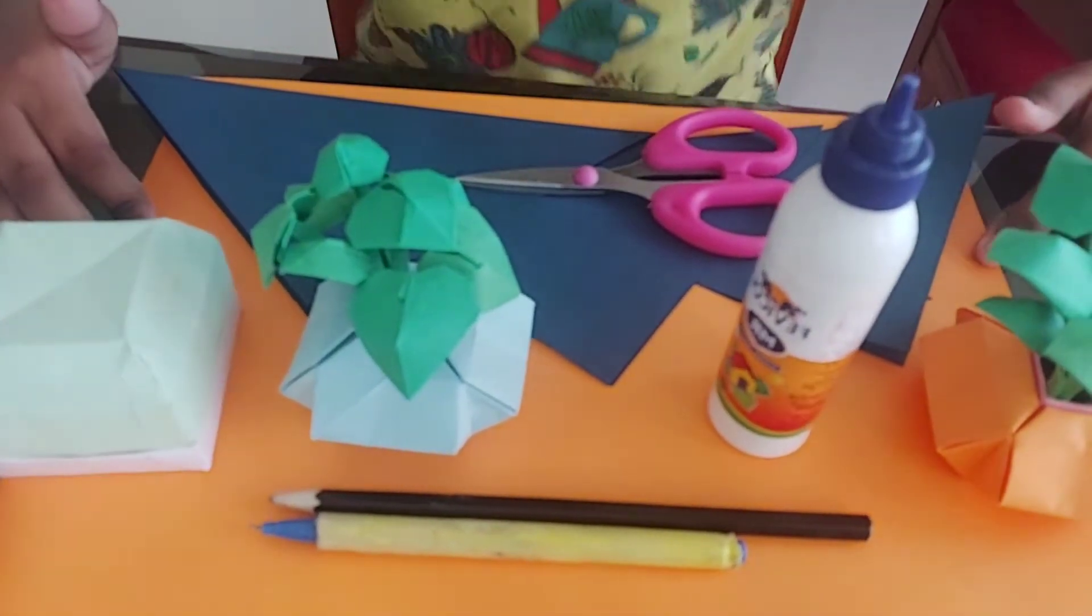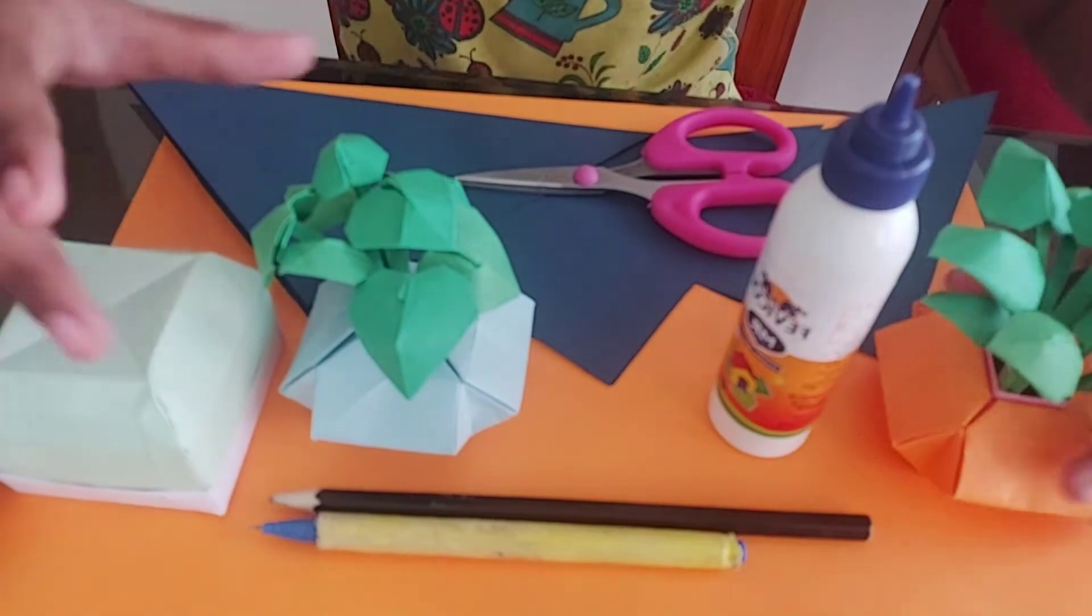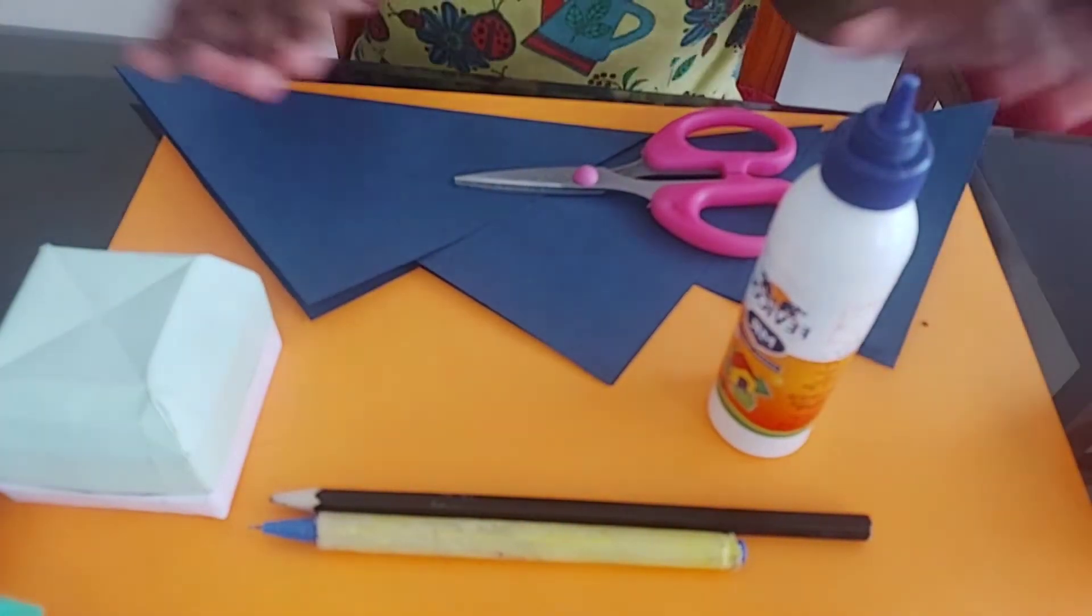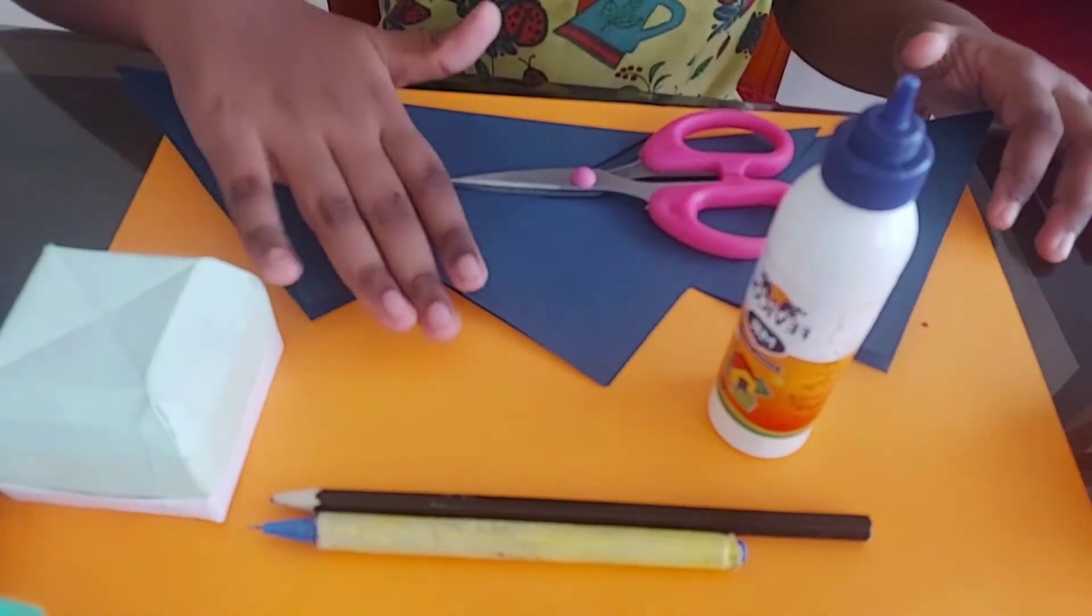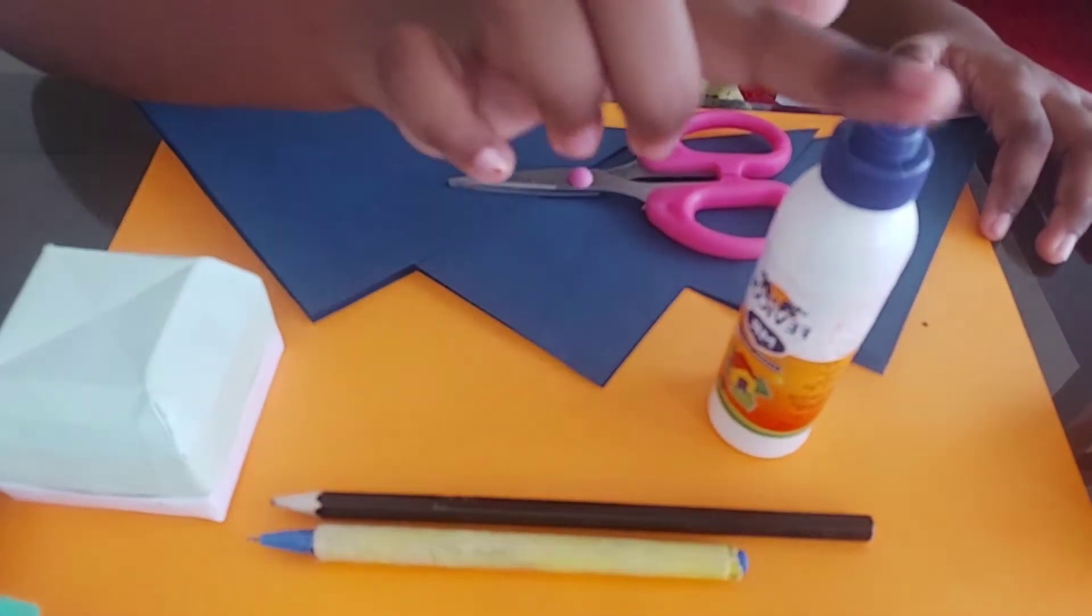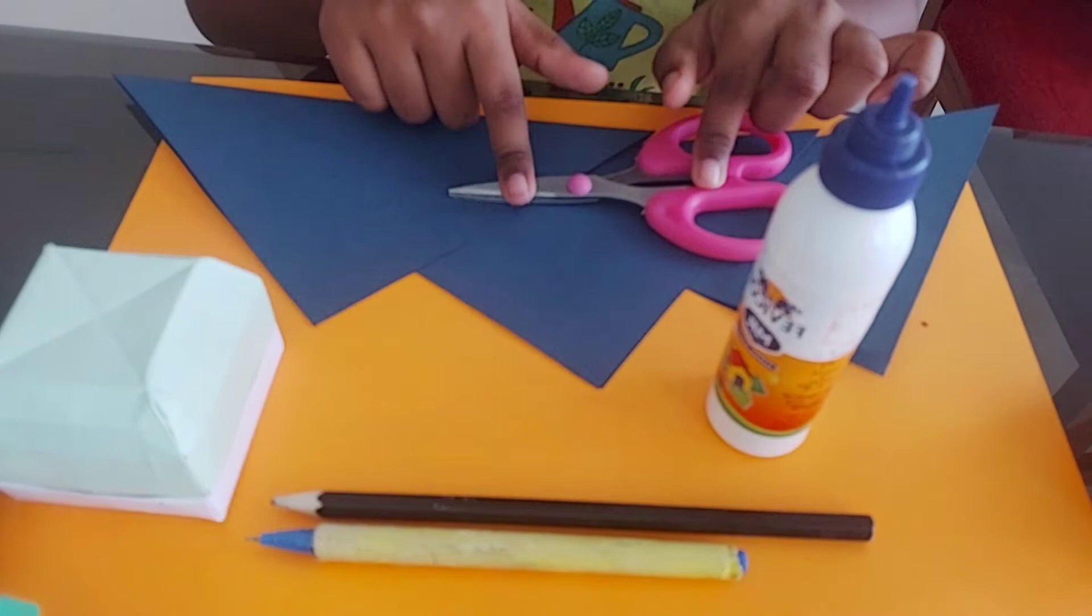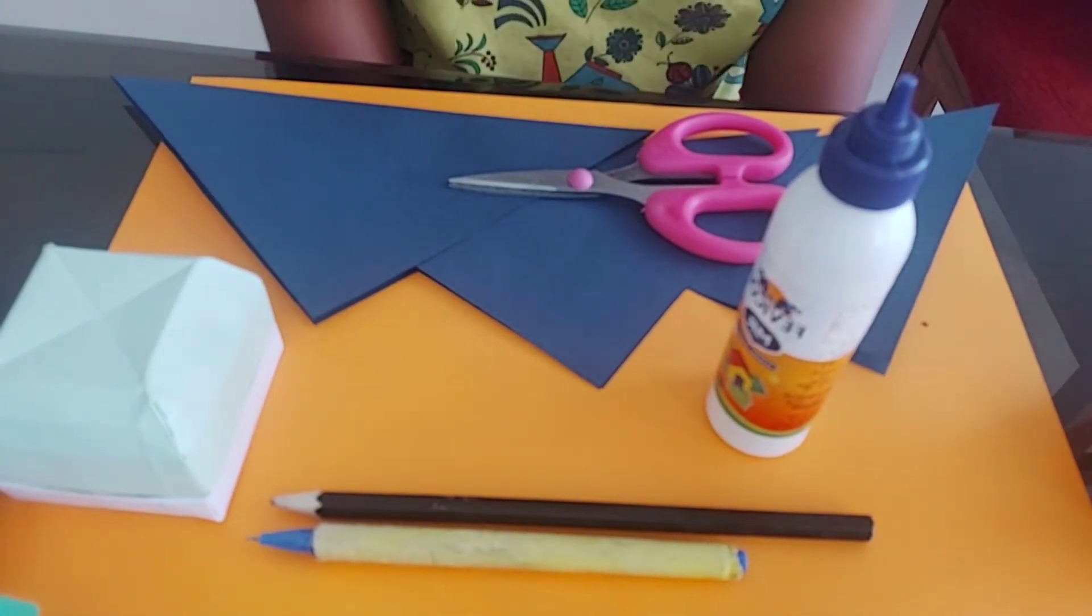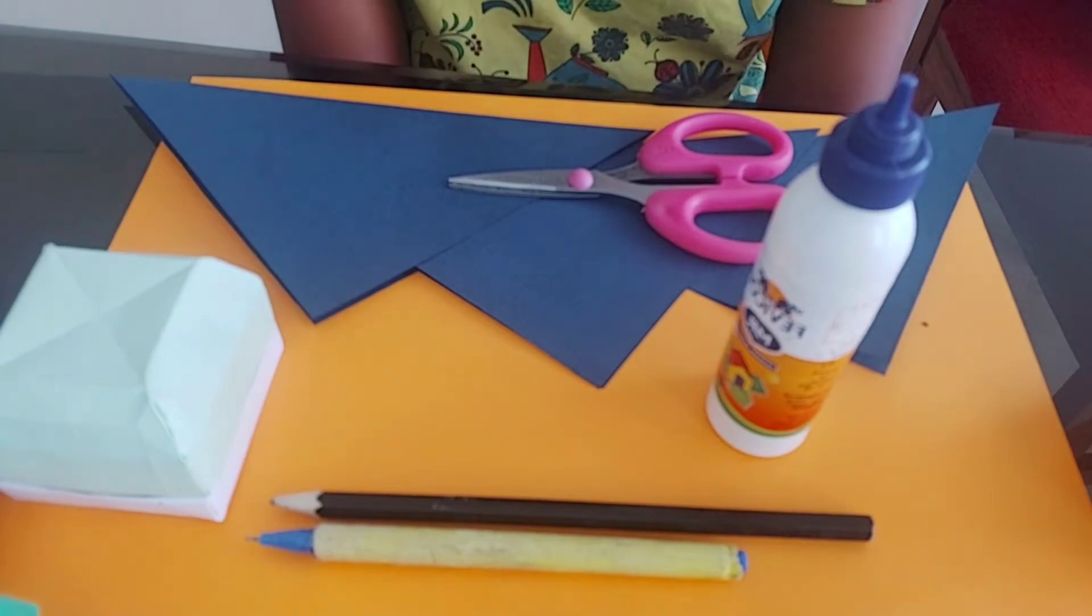Materials required are given in the description box below and you can see it right now too. Things required: pencil or pen, glue, scissors and 3 sheets of square paper. You can use any color of your choice.